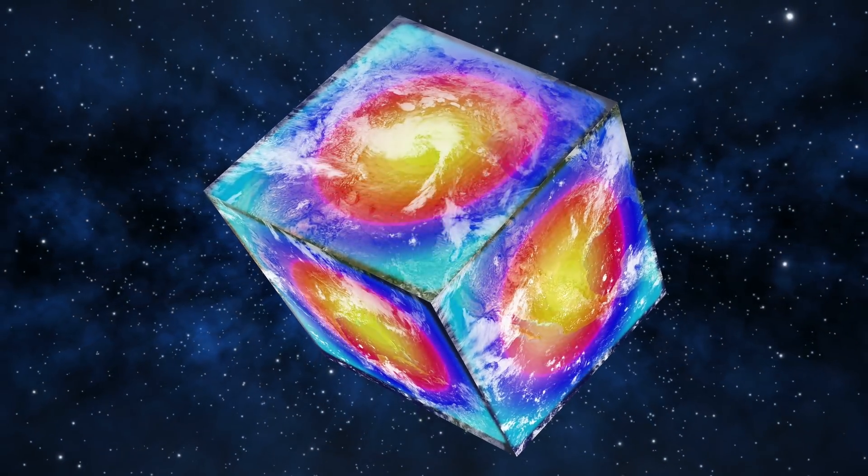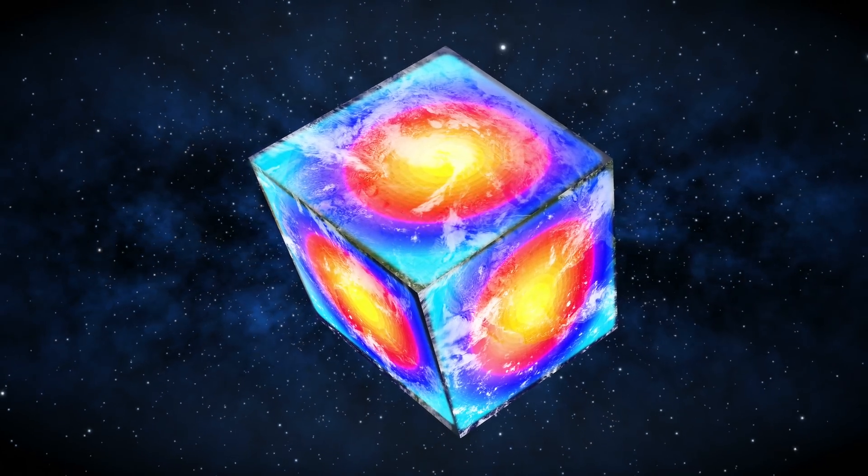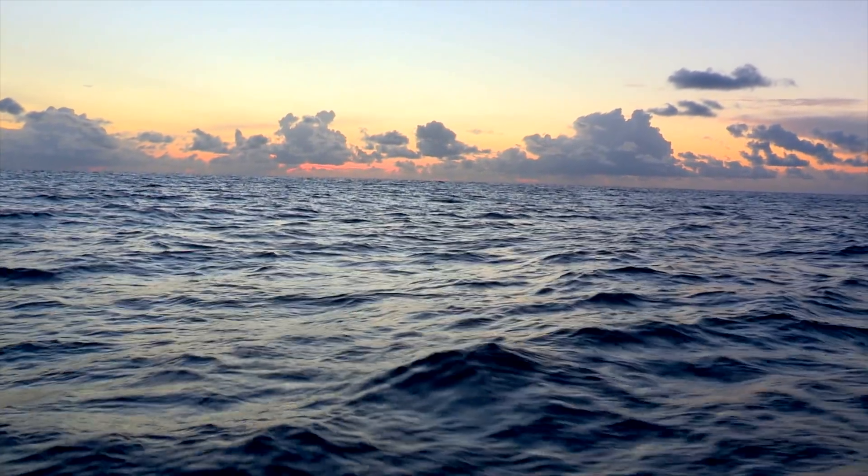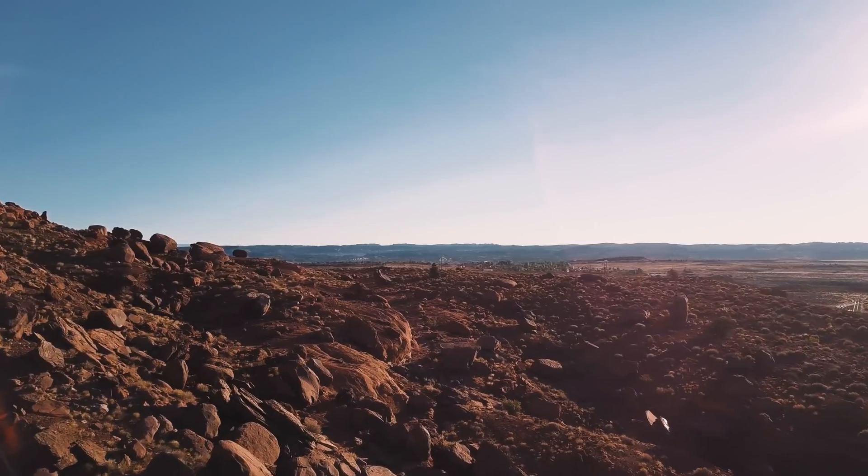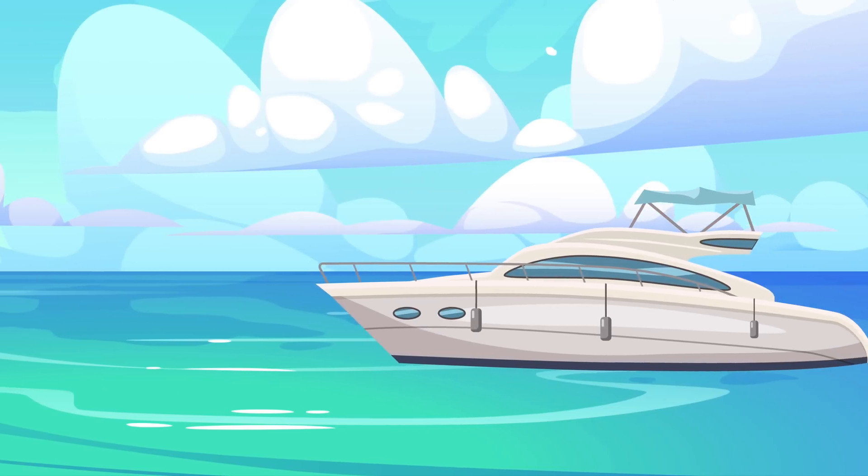If Earth was a cube, gravity would be strongest at the center of each face. That's because the force of gravity increases closer to the center of gravity. As a result, all water in our atmosphere would be drawn towards the center of the faces of Earth. This means the edges of the Earth would be barren rock with no atmosphere, while the center would be all water.